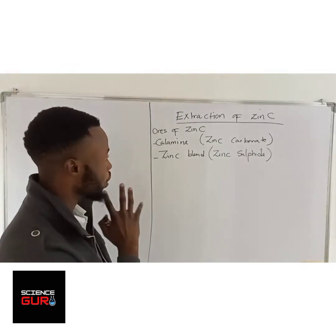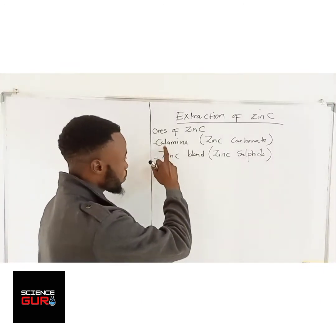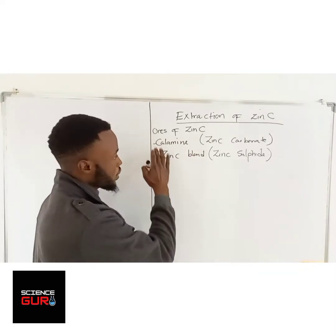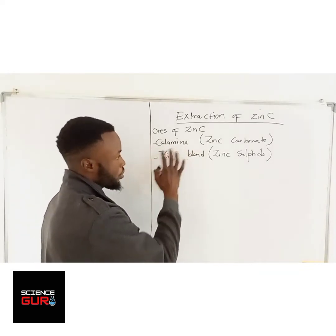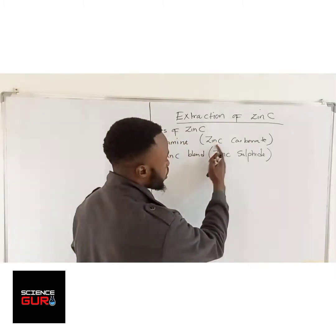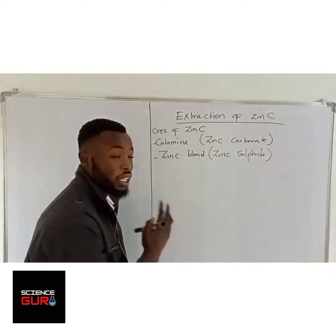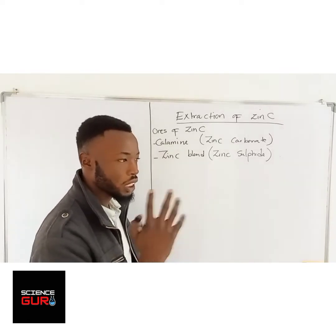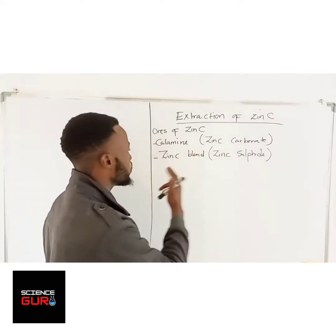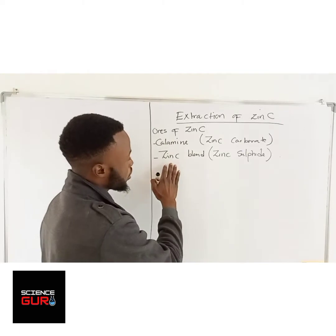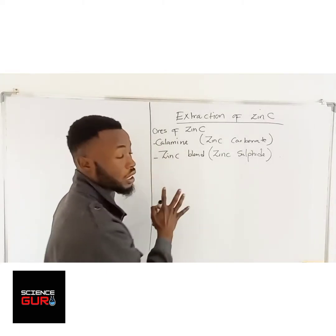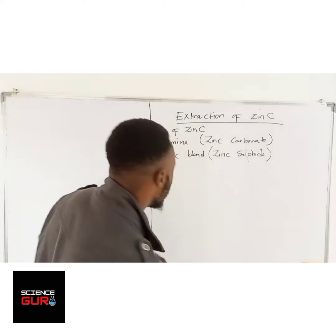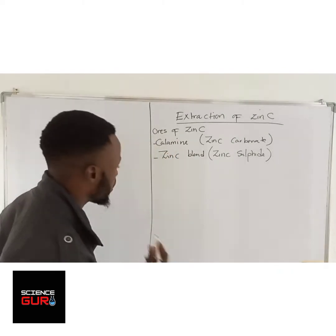Here are some of the ores of zinc. The first is calamine — the industrial name — and the chemical name is zinc carbonate. Sometimes they are going to ask you: what is the industrial name of zinc carbonate? It's calamine. The second is zinc blende — the industrial name — and the chemical name is zinc sulfide.